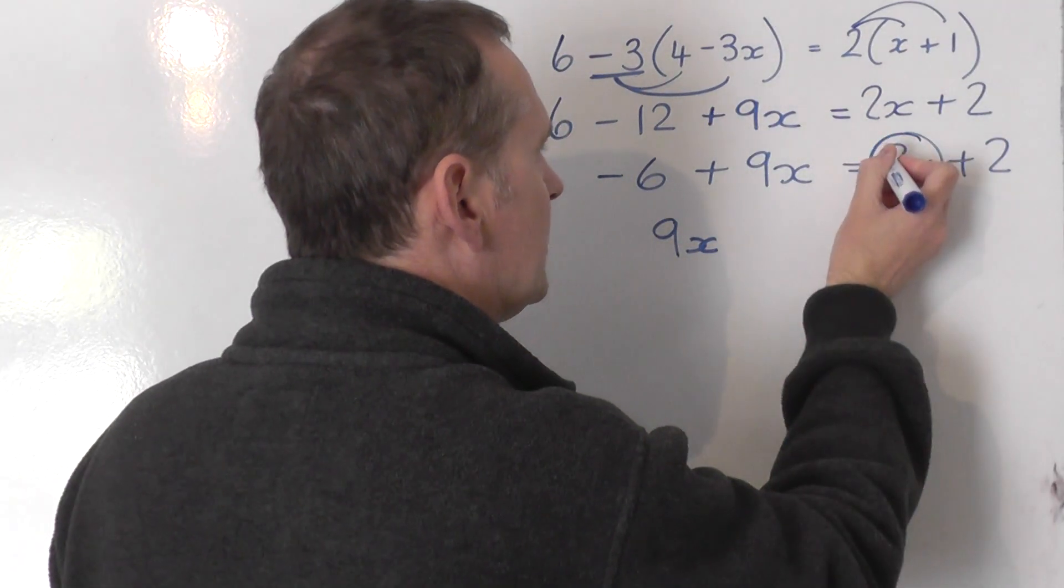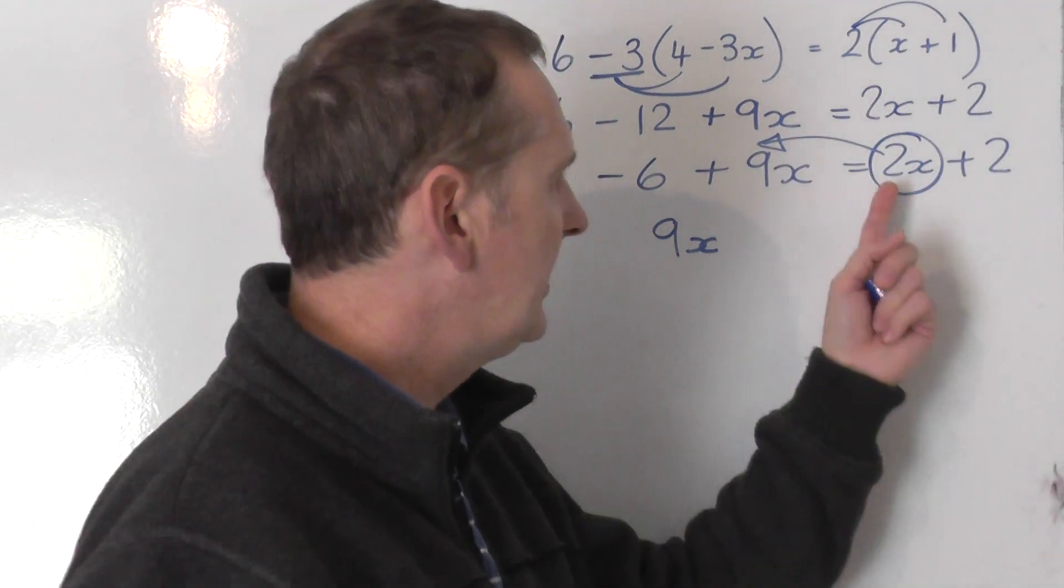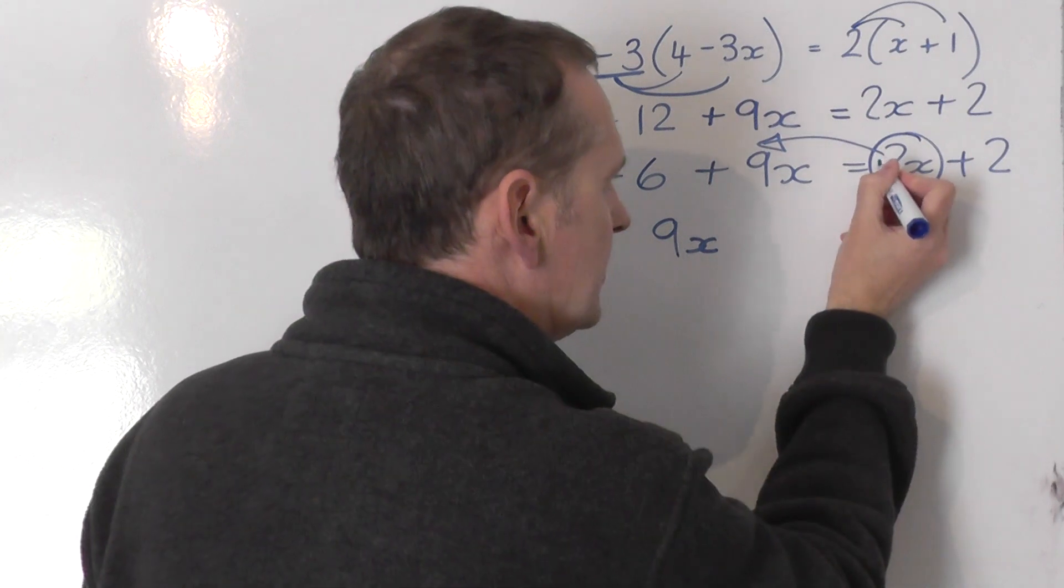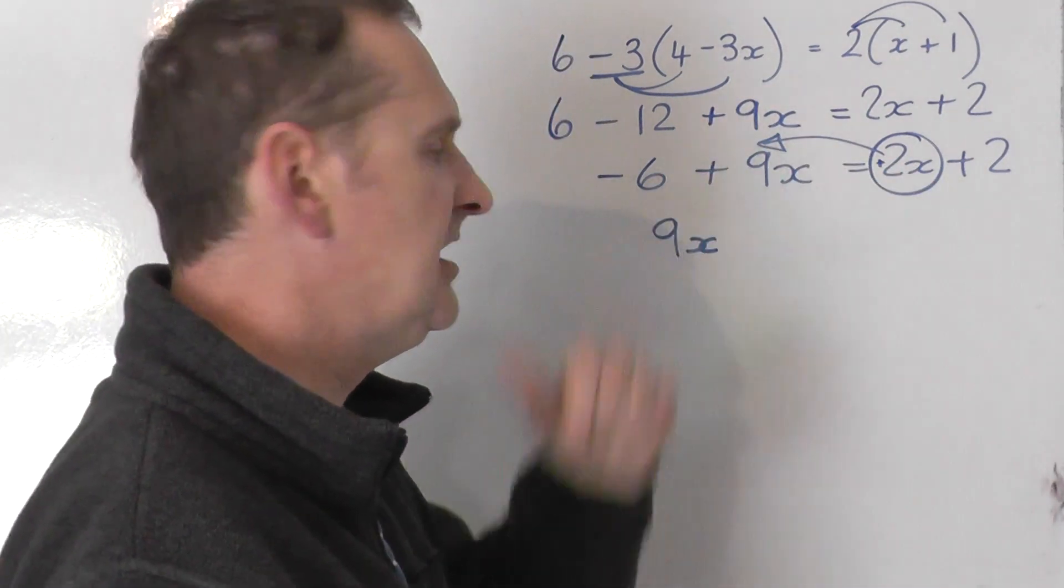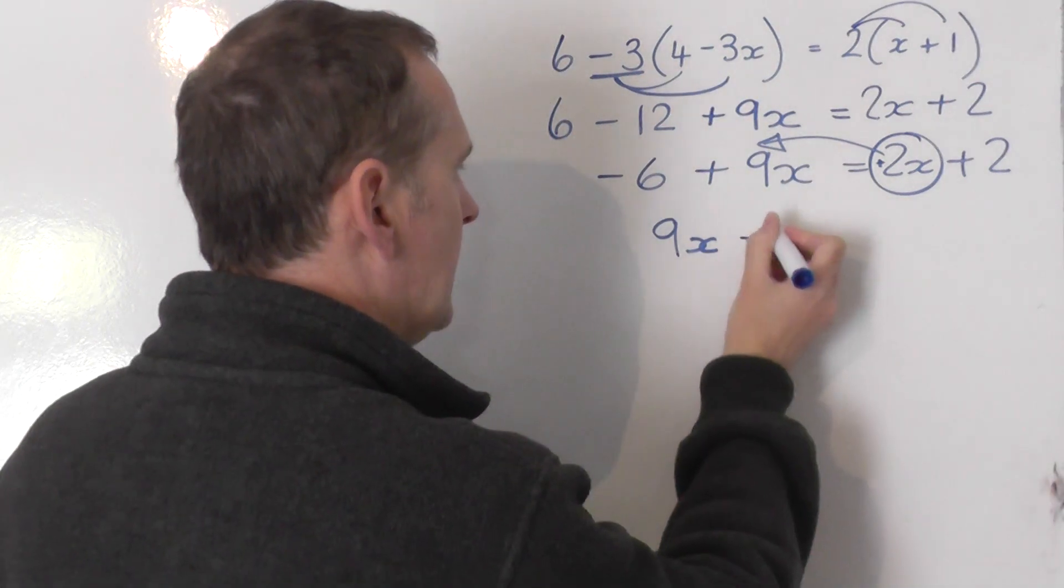I'm going to take that 2x from the right hand side to join it on the other side. Well that 2x has actually got a plus in front of it even though you can't see it. If you take it to the other side it swaps sides, it becomes a minus 2x.